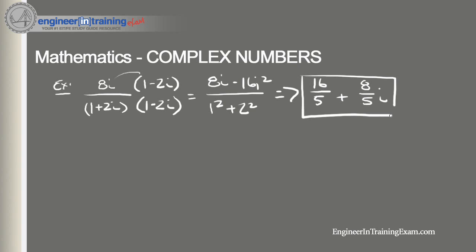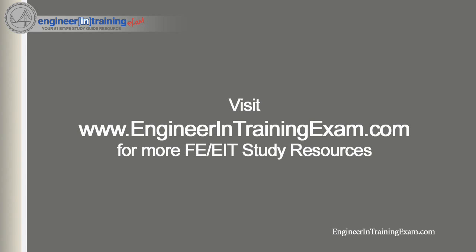That's a quick review of complex numbers. We covered how to add and subtract, how to multiply, defined what the conjugate is, and showed how to divide complex numbers to arrive at an answer in standard form A plus Bi. Visit engineerintrainingexam.com for questions and feedback, subscribe to the YouTube channel, and consider signing up for the free EIT preparation boot camp. Take care, and we'll be talking soon!